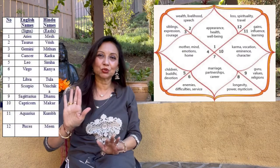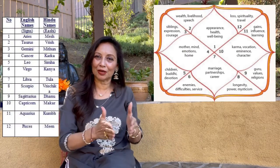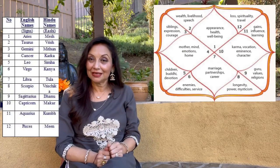There are 12 houses in a birth chart and there are 12 zodiac signs that correspond to these 12 houses. In a birth chart, depending upon which zodiac sign your moon is placed in becomes your moon sign. Depending upon which zodiac sign the sun is placed in becomes your sun sign, and depending upon which zodiac sign becomes the first house becomes your ascendant or rising sign.